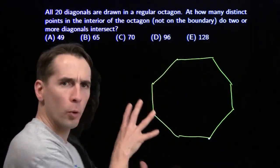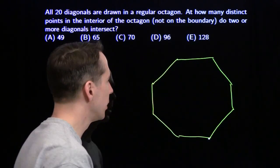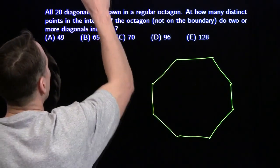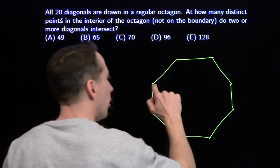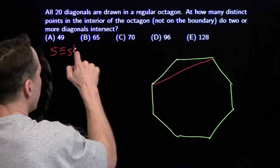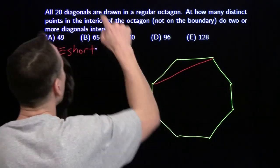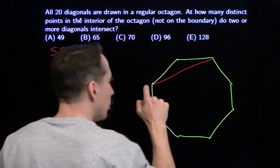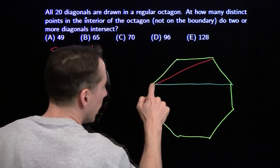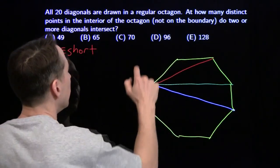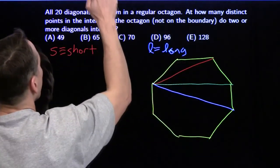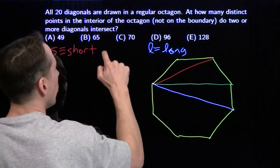Let's think about how we can organize our counting of where all these diagonals intersect. There are 20 diagonals, but there are really only three types of diagonals. Let's organize our counting by the lengths of the diagonals. We have short diagonals — I'll paint those red, S for short. Then we have medium length diagonals, colored green. And then we have the really long diagonal that goes right through the middle of the octagon — L for long, and M for medium.